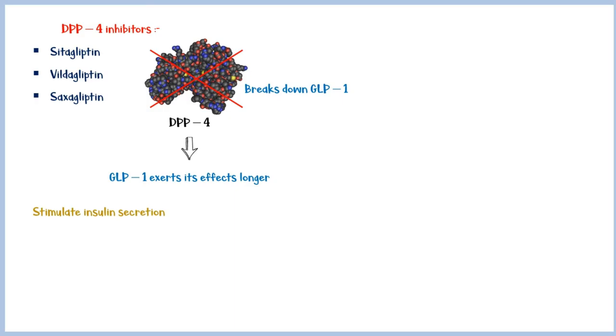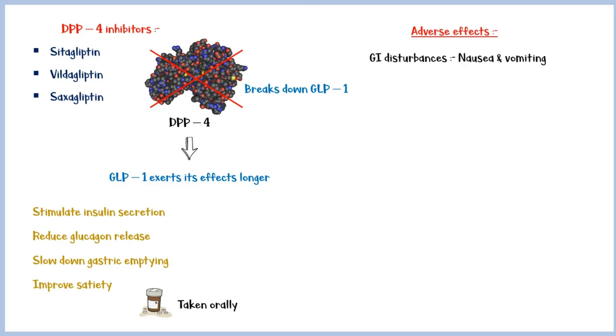They stimulate insulin secretion, reduce glucagon release, slow down gastric emptying, and improve satiety. Unlike GLP-1 agonists, these medications are taken orally. Common side effects include GI disturbances such as nausea and vomiting, nasopharyngitis, headache, and mild urinary and respiratory infections. These medications do not cause weight gain or weight loss, so they are weight neutral.